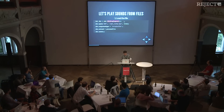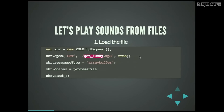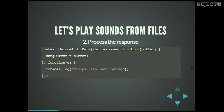What really sounds good is songs, so let's play a song. First we have to load a file by creating an XML HTTP request. We need to set the response type to array buffer, because we're dealing with binary data. On load, we process the file: we use the context to decode all the audio data, which gives us a success callback with a buffer — something we can use to play that song. I hope it works today — it worked yesterday.